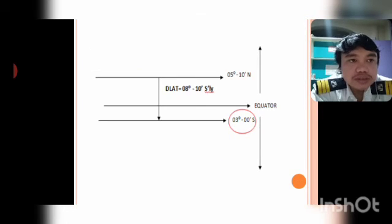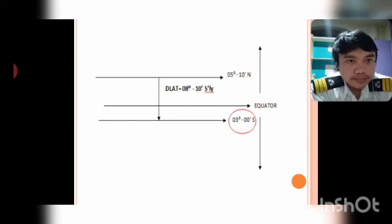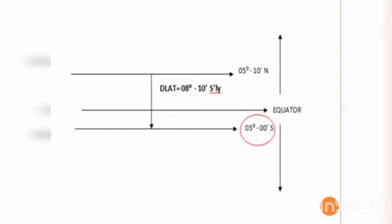In this diagram, the starting point is 05 degrees 10 minutes north. Going southward, the vessel passes through the equator — covering 05 degrees 10 minutes to reach the equator — and the remaining distance of 03 degrees 00 minutes south comes from the total difference of latitude of 08 degrees 10 minutes south.